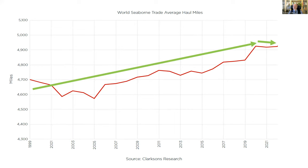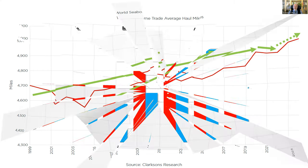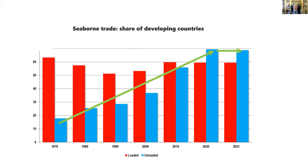During COVID the average trade distance went slightly down, but the very latest data has gone up again. And for the third trend — the share of developing countries in seaborne trade decreased for the first time since 1968, because of additional purchases in richer countries and lockdowns in China. But the latest data is continuing the previous trend. In a nutshell: these long-term trends were interrupted, we all wondered if this meant a change in paradigm, but it seems we are back on the long-term trajectory.